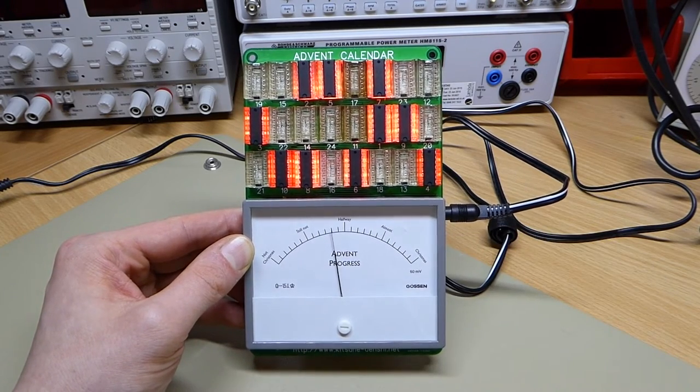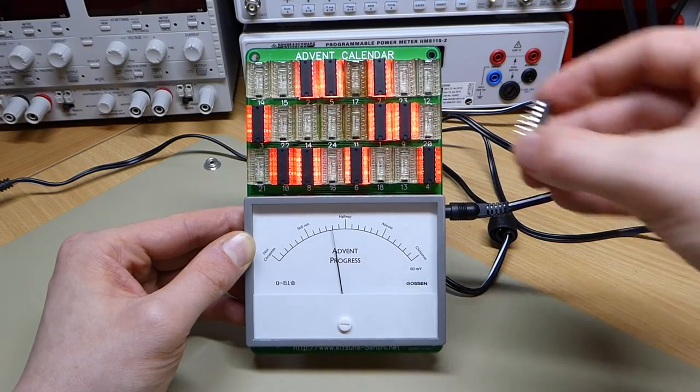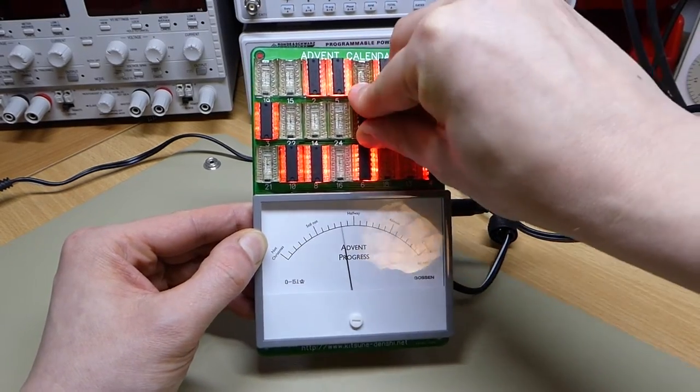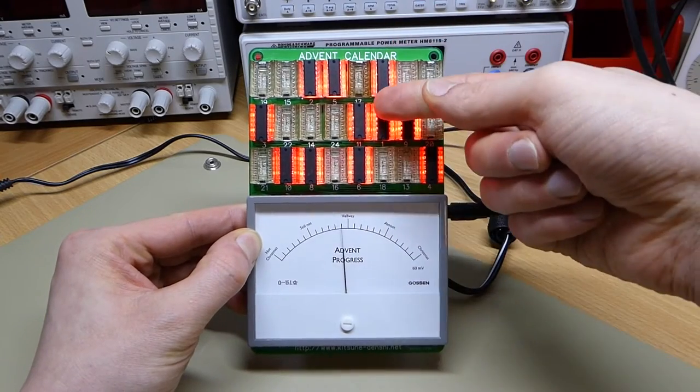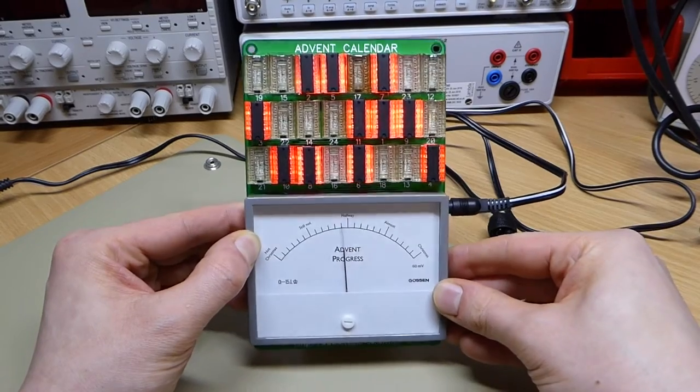This obviously repeats further on. The next day would be day 11, which is here. Again, the socket behind the IC lights up and the meter moves on by another day.